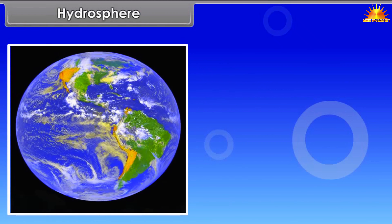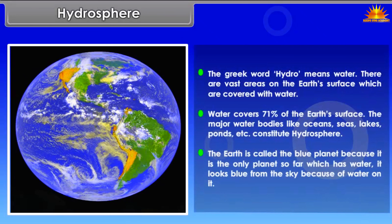The Greek word 'hydro' means water. There are vast areas on the earth's surface covered with water — water covers 71% of the earth's surface. Major water bodies like oceans, seas, lakes, ponds, etc. constitute the hydrosphere. The Earth is called the blue planet because it is the only planet with water, and it looks blue from space because of the water on it.